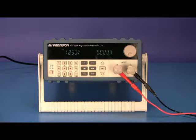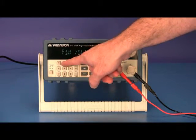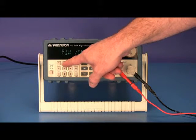Next, press the shift and then battery button. Enter the minimum voltage level at which you want the test to end, then press the enter button.